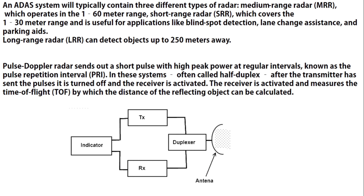Related to ADAS radars, we have three types. The first is the Medium Range Radar, MRR, which operates in the 1 to 16 meter range. The second is the Short Range Radar, SRR, which covers 1 to 30 meters.